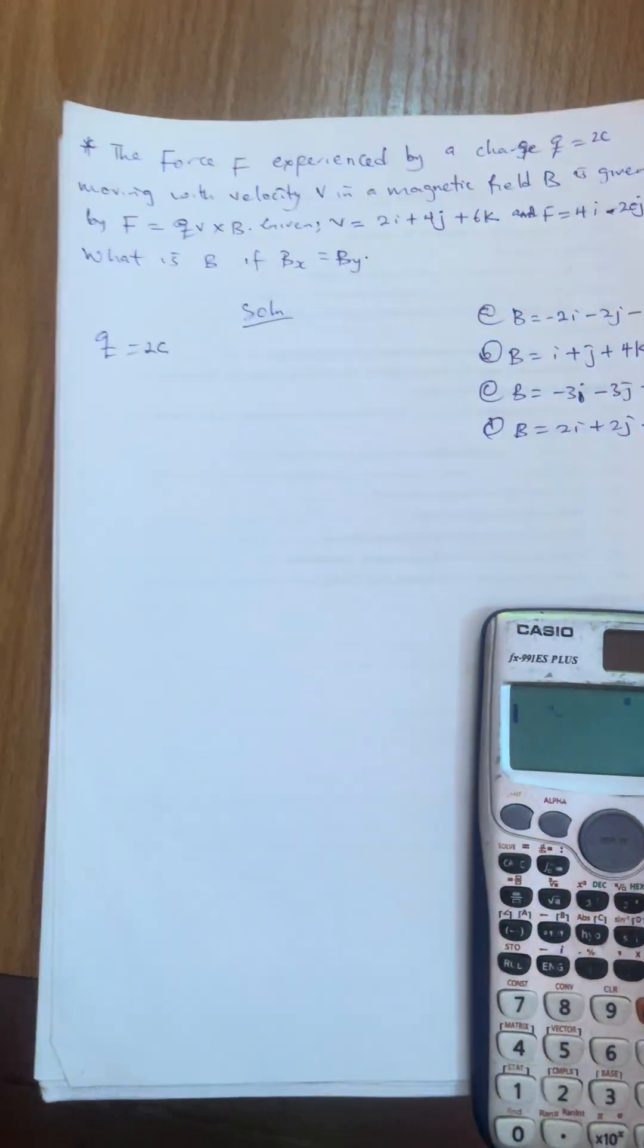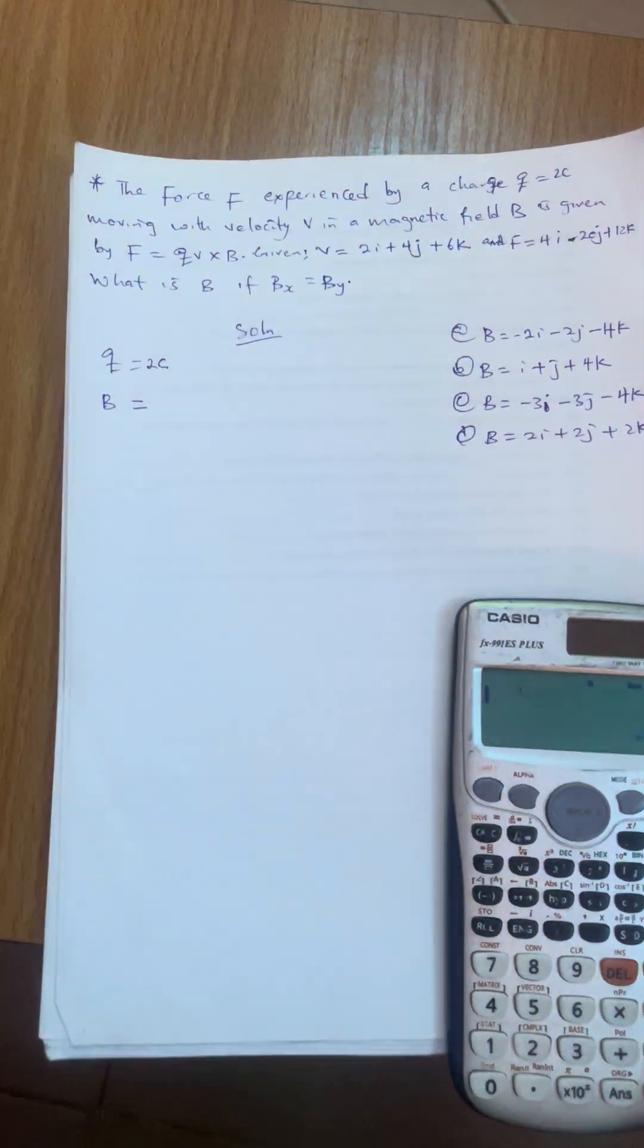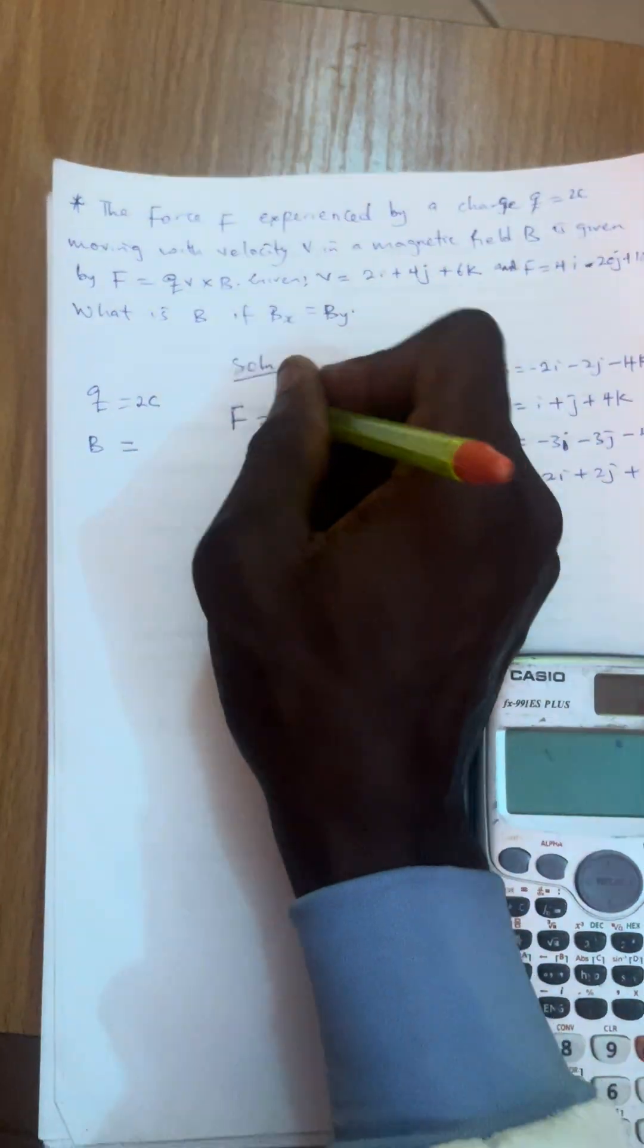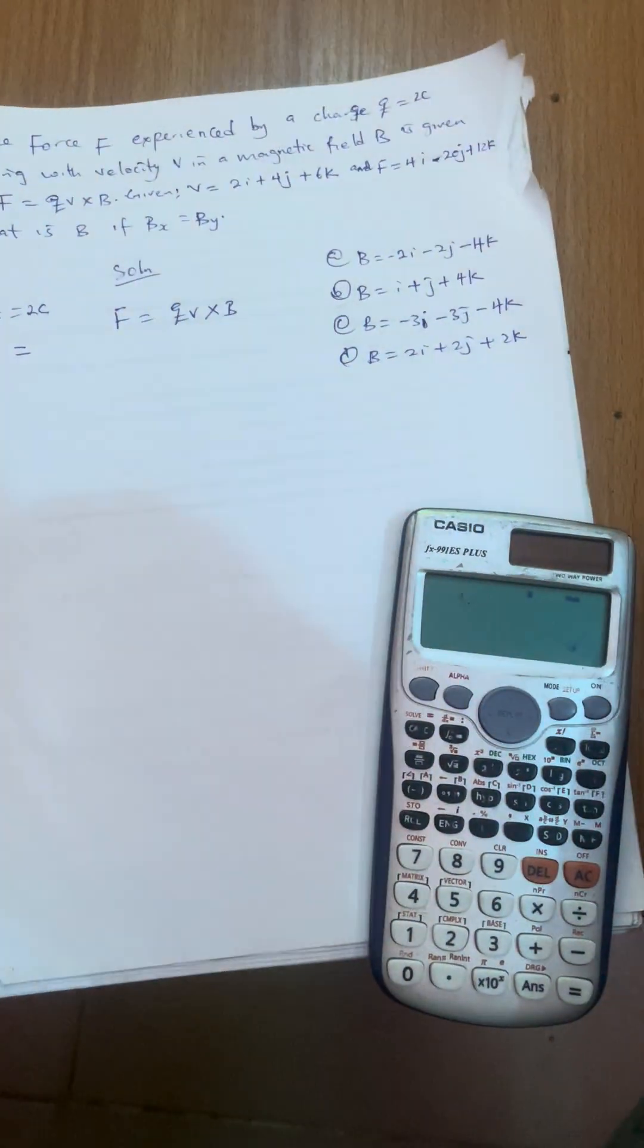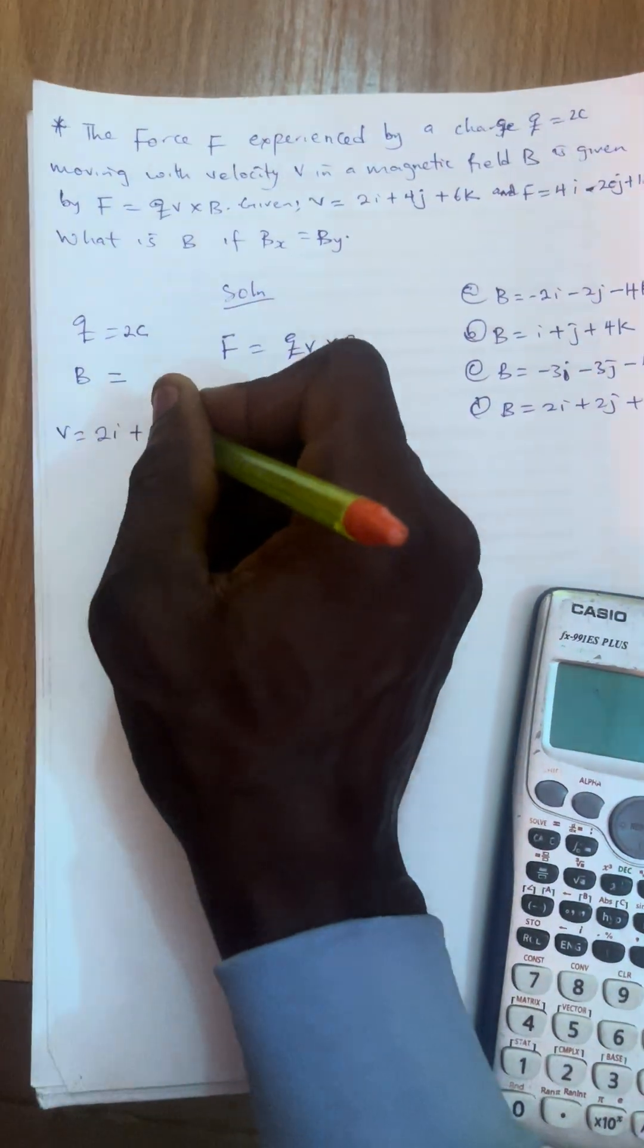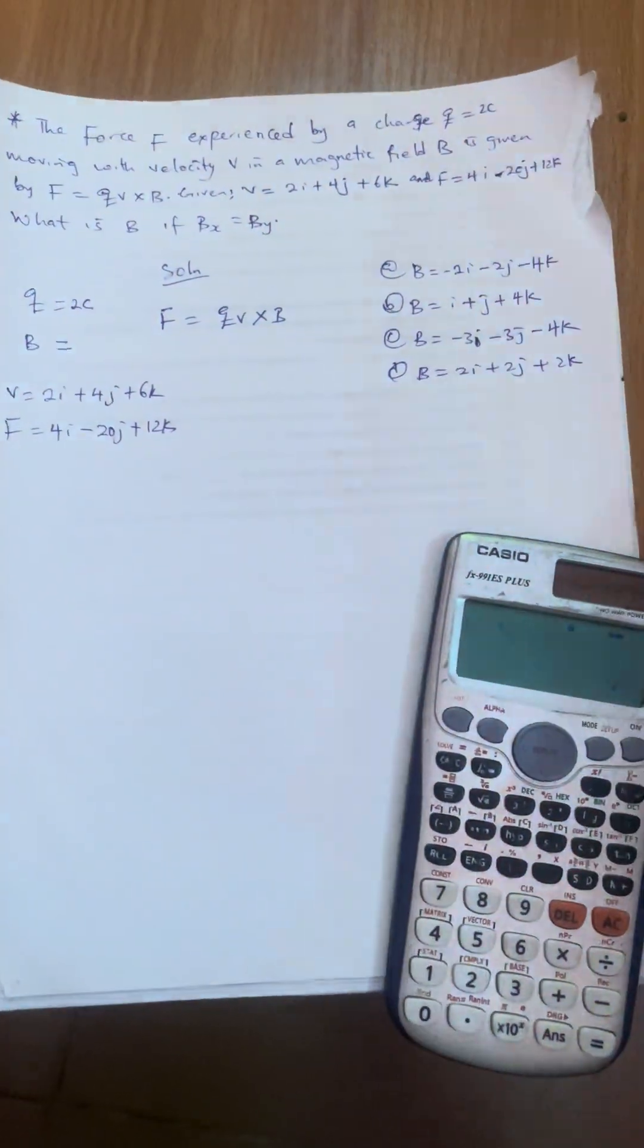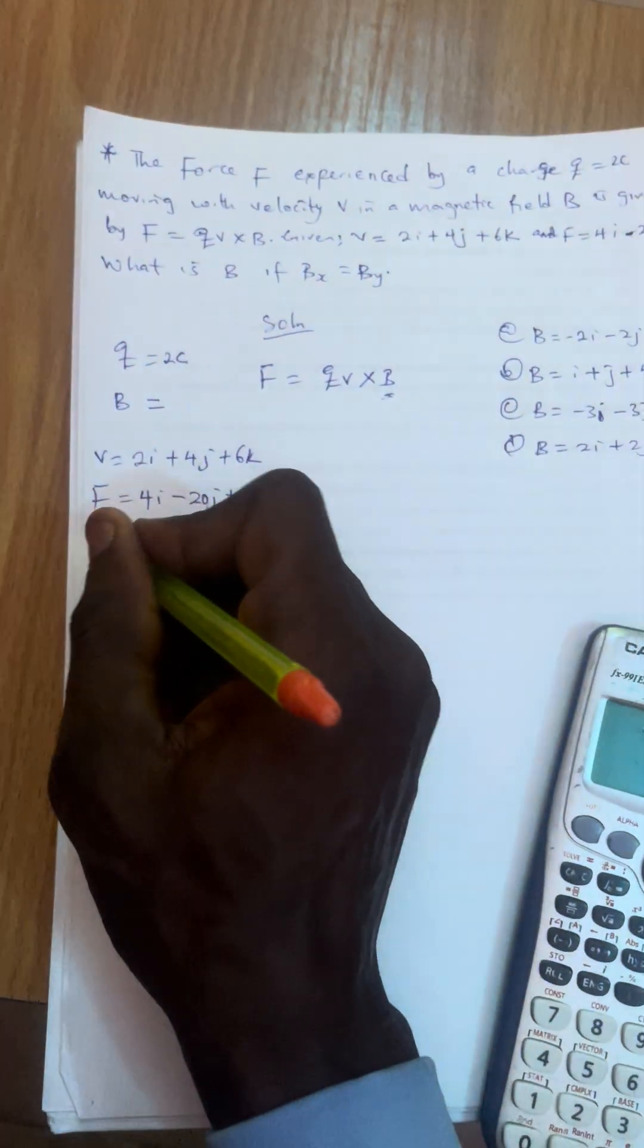They said moving with velocity in a magnetic field B. So we are given magnetic field B. They said the equation is given to us as F is equal to Q V cross B. Many of us will say times, no. In vector analysis, this multiplication sign is cross. And we are given V is equal to 2I plus 4J plus 6K. We are given F to be equal to 4I minus 20J plus 12K. The question is what is B? They now give us a condition. They said if Bx is equal to By.